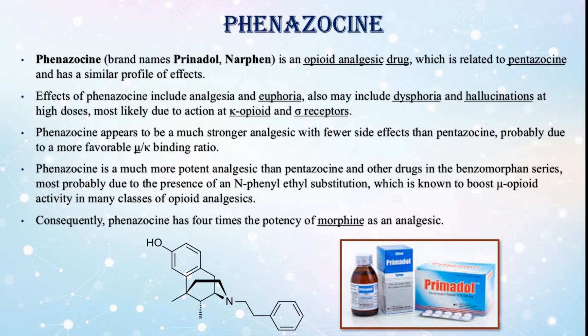Phenazocine is a much more potent analgesic than pentazocine and other drugs in the benzomorphan series, most probably due to the presence of an N-phenylethyl substitution, which is known to boost mu-opioid activity in many classes of opioid analgesics. Consequently, phenazocine has 4 times the potency of morphine as an analgesic.